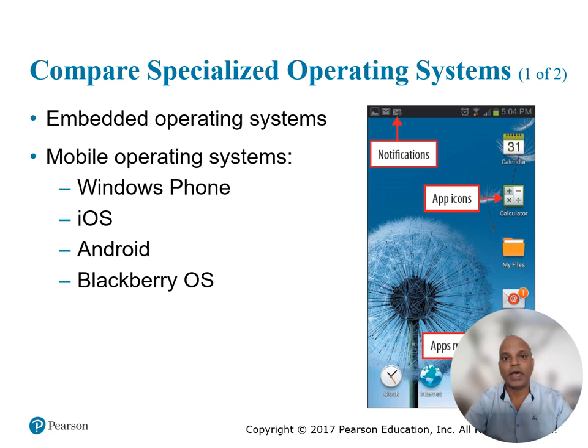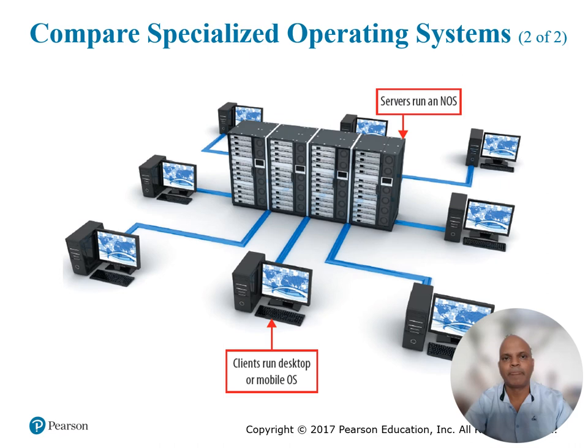Mobile devices such as smartphones and tablets run mobile operating systems, which provide touch screen support, email, and browsers. The Windows Phone mobile operating system is found on many smartphones. The iPhone, iPad, and iPod touch use a scaled-down version of OS X called iOS. Android devices use an embedded version of Linux. Shown here is the interface for an Android phone with app icons, notifications, and an apps menu. The BlackBerry OS runs on BlackBerry smartphones.